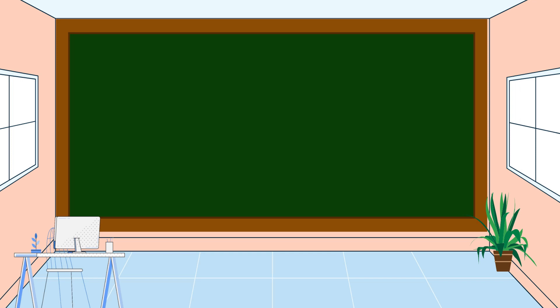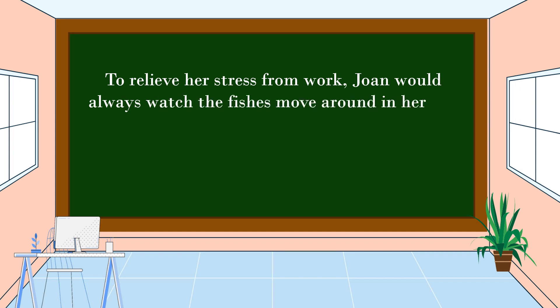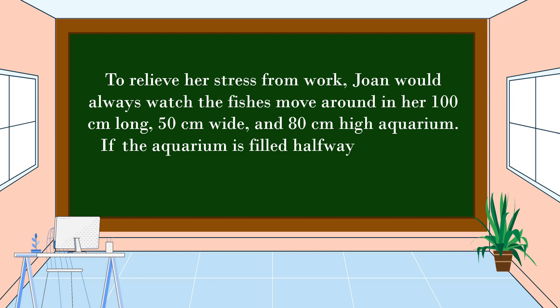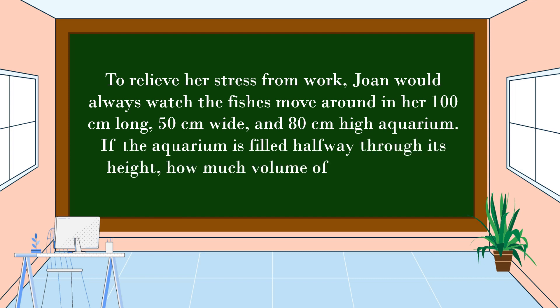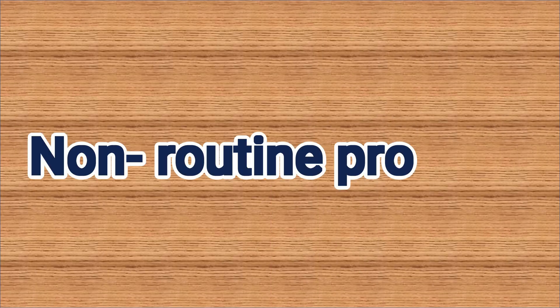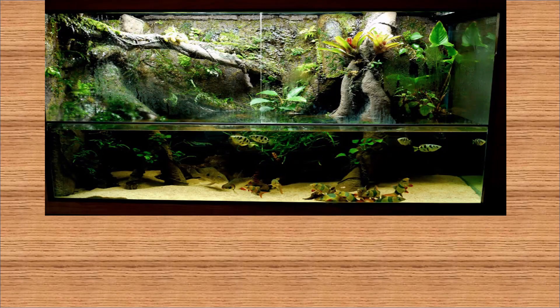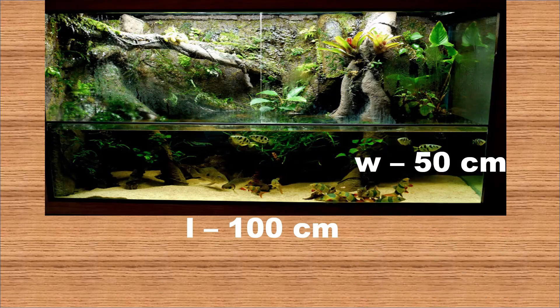This is our second problem. To relieve her stress from work, Joanne would always watch the fishes move around in her 100 centimeters long, 50 centimeters wide, and 80 centimeters high aquarium. If the aquarium is filled halfway through its height, how much volume of water is in it? The second example is a non-routine problem. We can use an illustration to analyze the problem, then solve. This aquarium has dimensions: length of 100 centimeters, width of 50 centimeters, and height of 80 centimeters.